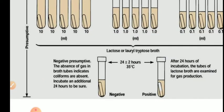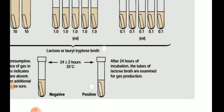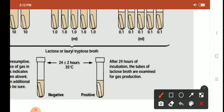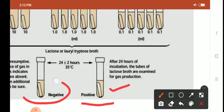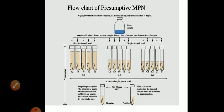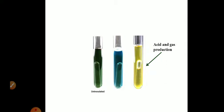After incubation for 24 hours, check whether there is acid and gas production or not. You can see that in the second test tube there is gas production, which is positive. This is negative — no gas production, no acid. Within 24 hours, if there is gas production and acid production in even a single tube out of 15, the presumptive test is considered positive. If there is no acid and gas production in any of the 15 tubes, re-incubate all tubes for another 24 hours. After 48 hours, if there is acid and gas production in even a single tube, presumptive test is positive. If no acid and gas production in any of the 15 tubes after 48 hours, presumptive test is negative and coliforms are absent — we need not perform the confirmed or completed test.